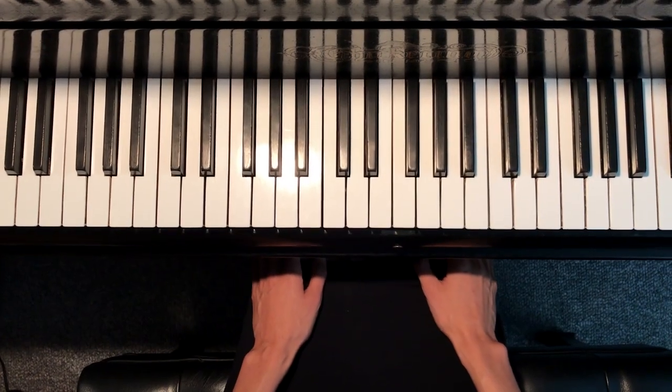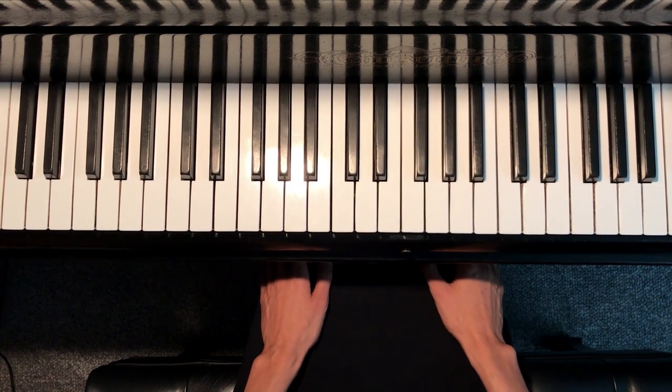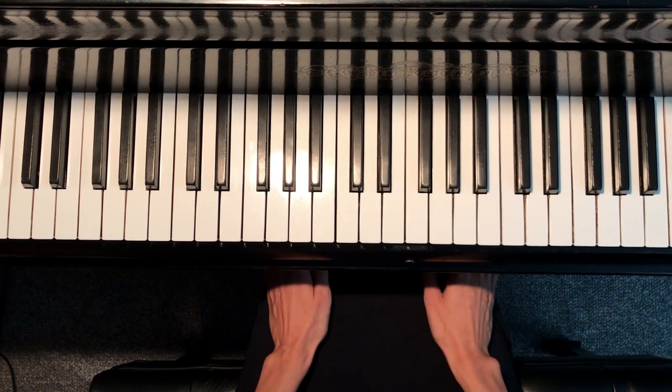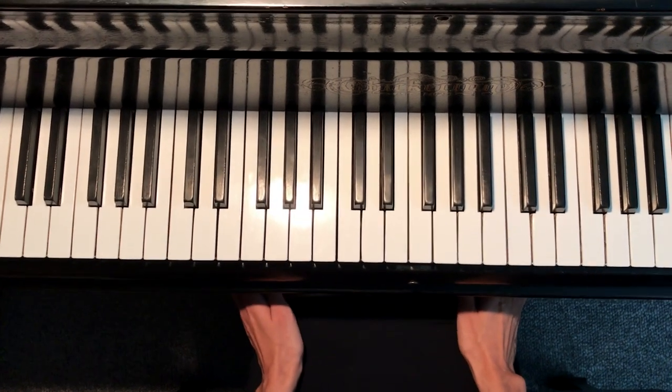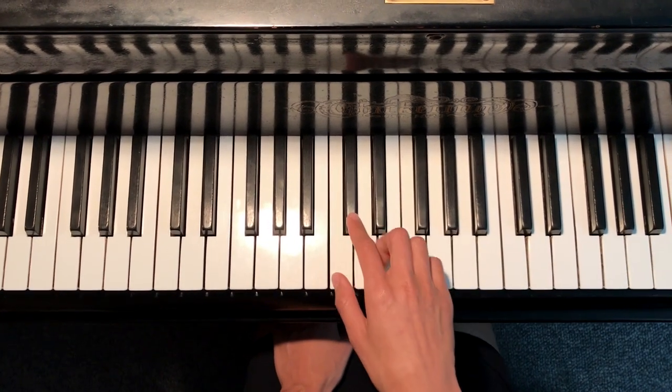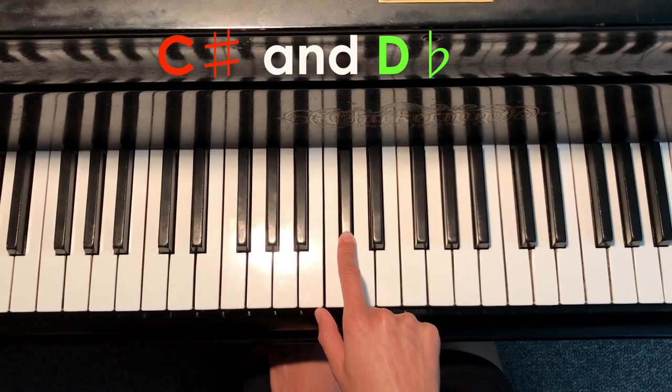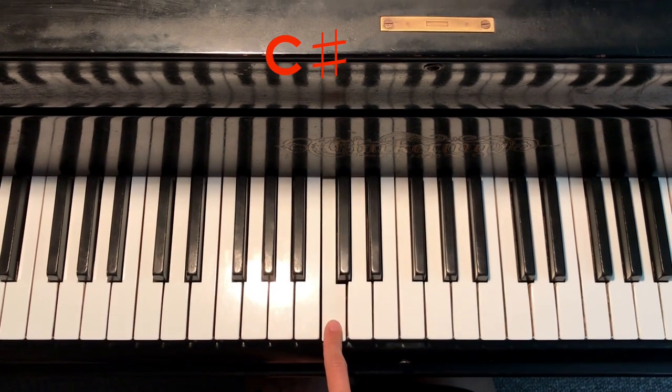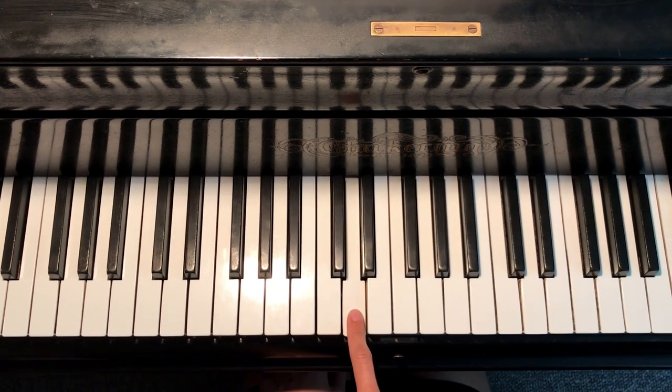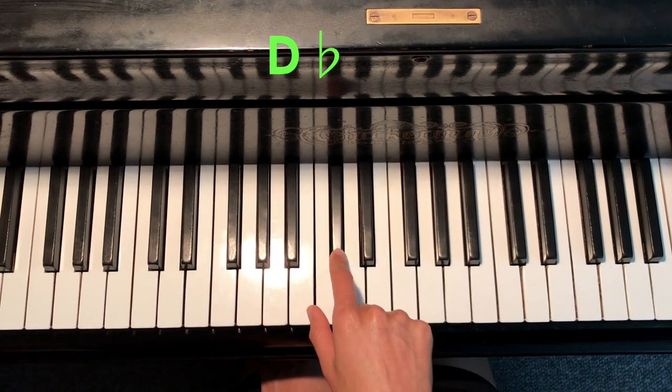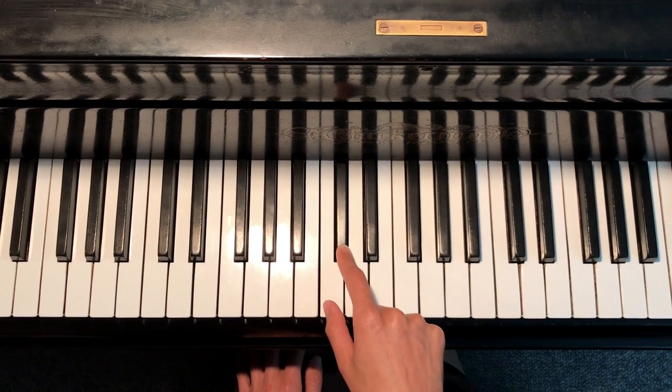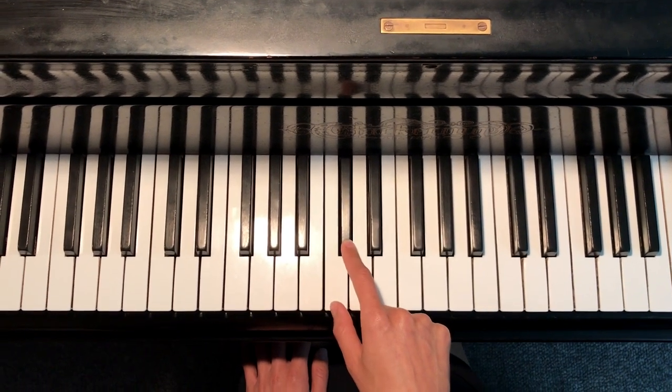Now that you know how to name the sharp and flat names for each of the black keys, let's practice naming enharmonic notes. When a black key has a sharp and flat name that are written differently, but are actually the same note on the piano, they're called enharmonic notes. An example would be C sharp and D flat. This note is known as C sharp because I took C and I went up a half step, but I can also get there by going from D and lowering it a half step to D flat. So C sharp and D flat are enharmonic notes because they are written or spelled differently, but are actually the same exact note on the piano.